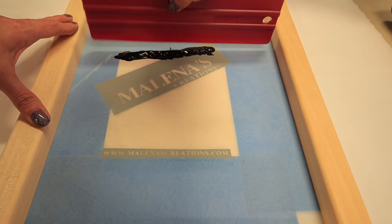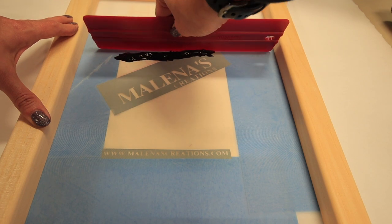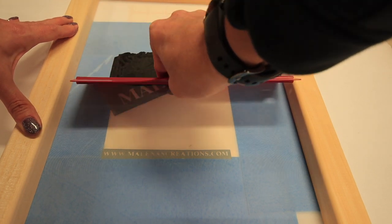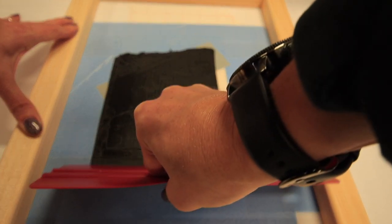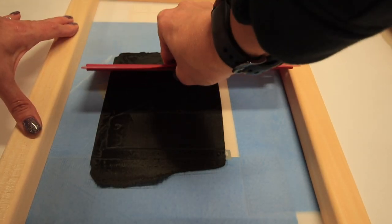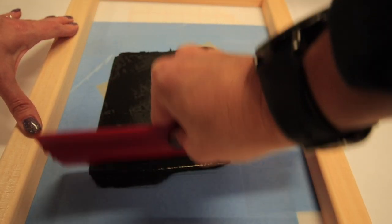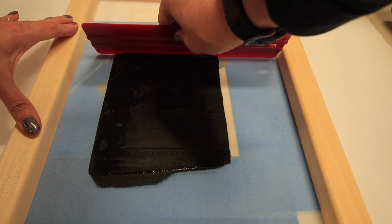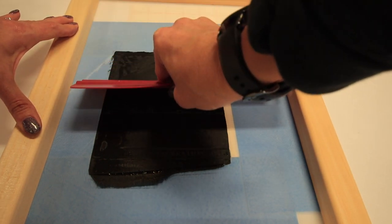And now for the fun part. So you're going to get your squeegee and you're going to go at an angle. So always start from the top and go straight down, but you want to go at an angle. And just one good swipe down, make sure you get it all in the grooves.